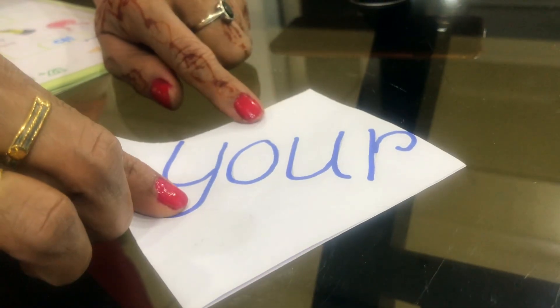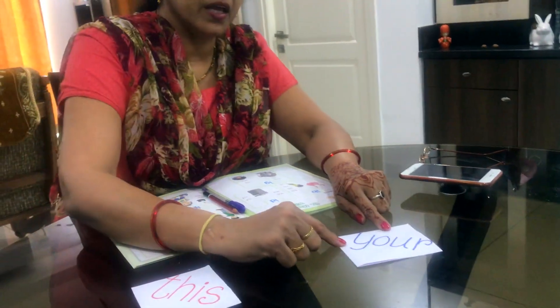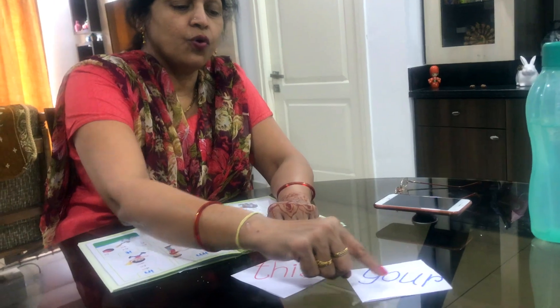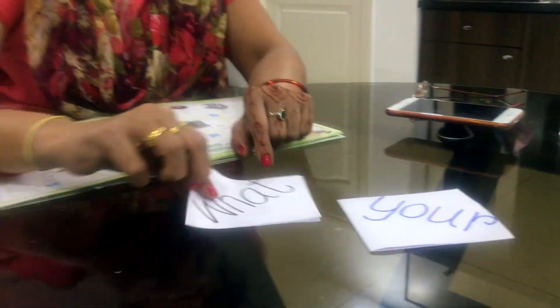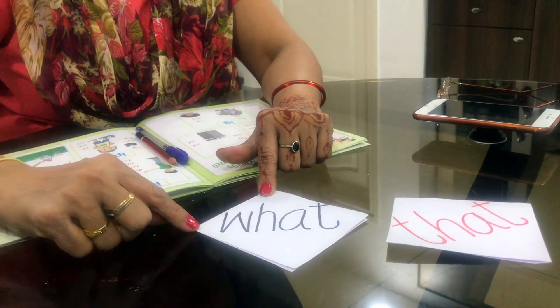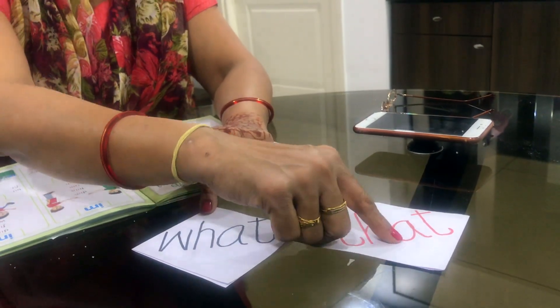Next one is Y-O-U-R — 'Your'. Madam used to ask 'what is your name?' and then you will say your name. That word is Y-O-U-R — 'Your'. So we have learned: W-H-A-T — 'What', T-H-A-T — 'That'. These are our sight words.